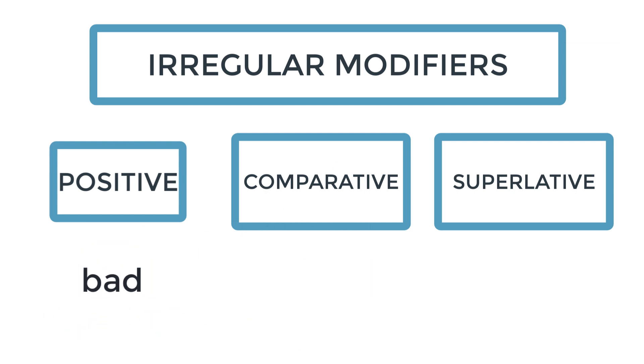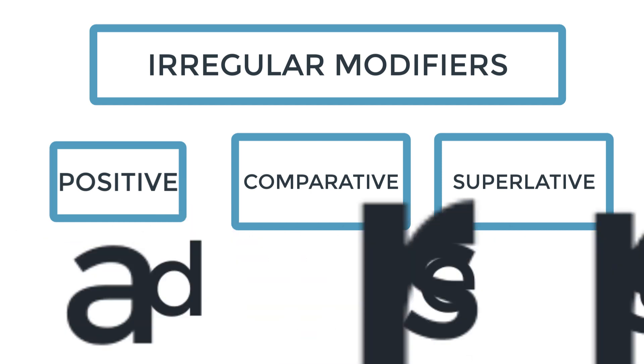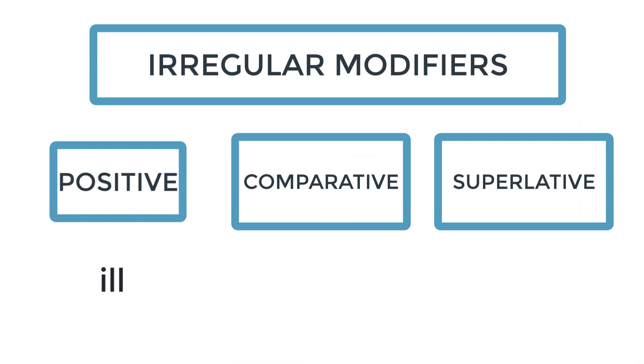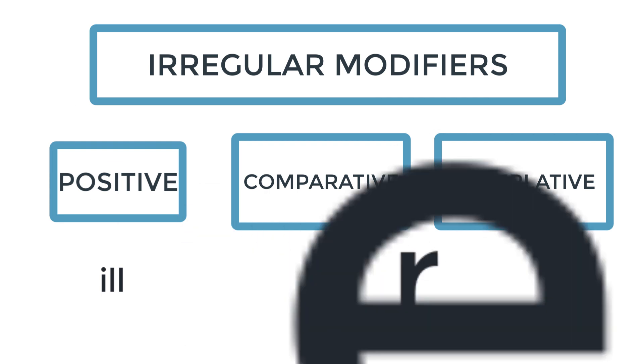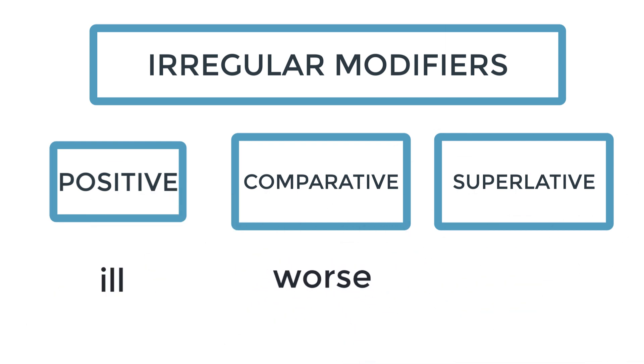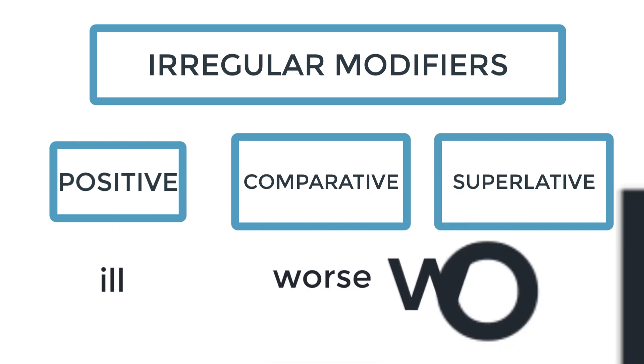Let's look at the word bad. The comparative for bad is not badder. Neither is the superlative baddest, although you may hear that in informal speech. The comparative for bad is worse, and the superlative is worst. Let's look at ill. Ill means to be sick. The comparative for ill is not iller. It is worse, just like for bad. And the superlative is also worst.